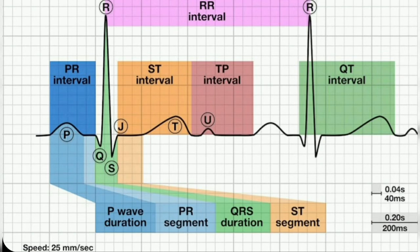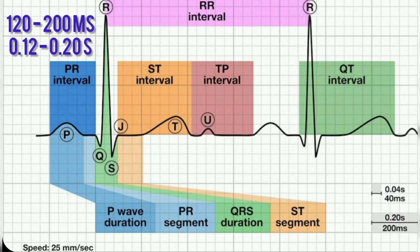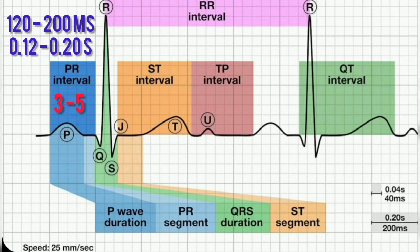The normal PR interval is between 120 to 200 milliseconds, or 0.12 to 0.20 seconds, or 3 to 5 small squares on ECG paper. Instead of remembering 120 to 200 milliseconds or 0.12 to 0.2 seconds, it would be more practical to remember 3 to 5 small squares, because whenever you look at an ECG, you see these small and big squares and not the seconds or milliseconds.